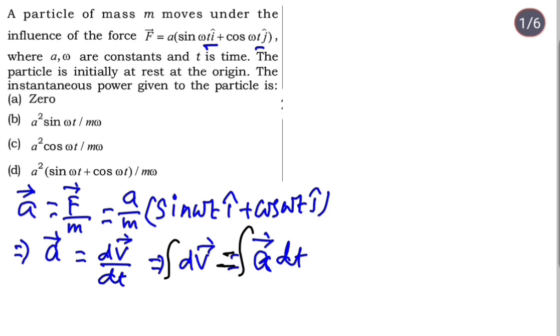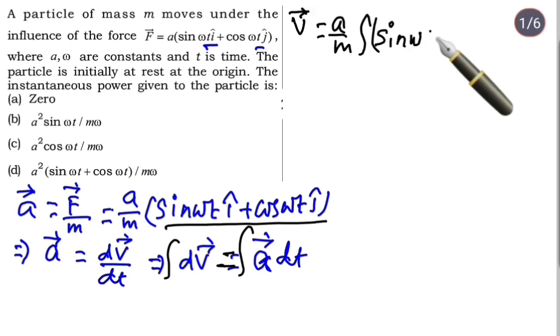We don't know about the limits yet, so let's work on this. The velocity vector we'll write as - this constant a by m is there, so we can take it out. Inside the integration, we'll have these terms. Let me write these terms: sin ωt i cap, cos ωt j cap.